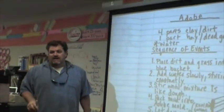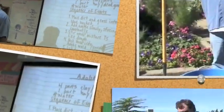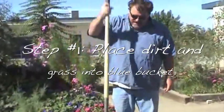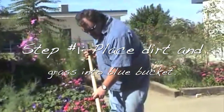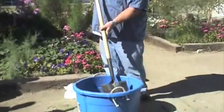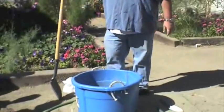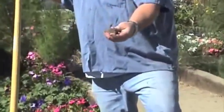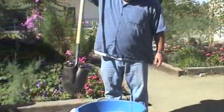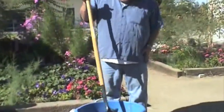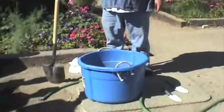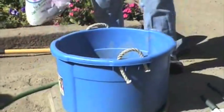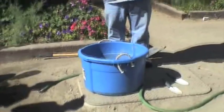Now we're going to go outside and make our adobe bricks! We have our blue bucket with dirt in it. I chose dirt that was almost always wet and already has a sticky consistency. We have about four buckets full of dirt — four parts dirt. How much hay or grass are we supposed to have? One part. A ratio of four to one. Here's the grass we picked yesterday — we're going to put that in.